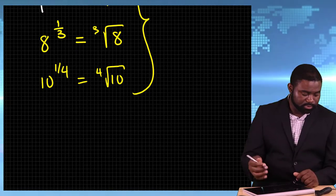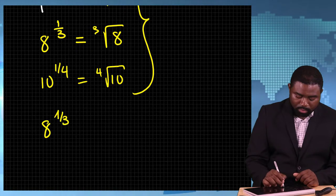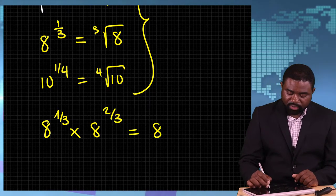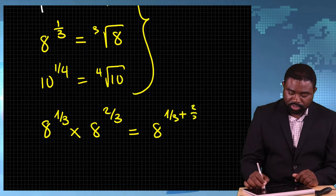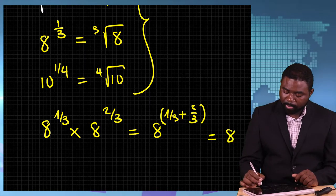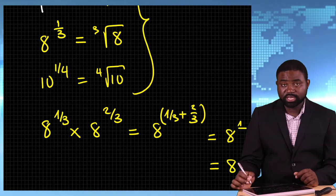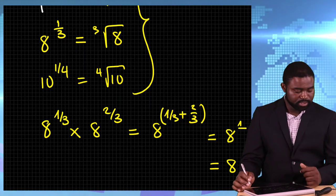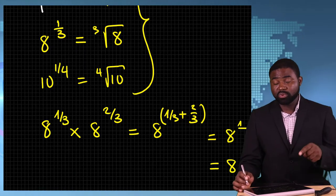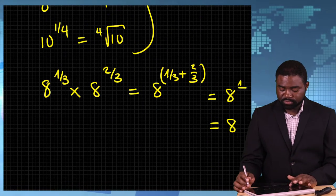I'm going to do some examples. Let's say 8 raised to the power 1 third, multiplied by 8 raised to the power 2 third. This is equal to 8 raised to the power 1 third plus 2 third, which is just going to be equal to 8 raised to the power 1, which is just going to be 8, because any number raised to the power 1 is itself. It's important for you to always remember that.